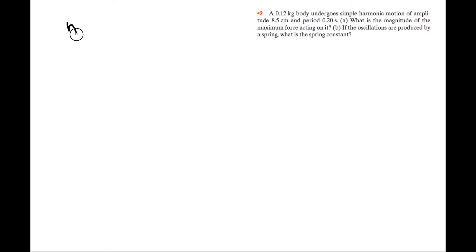I'm going to start by listing our variables. The mass is equal to 0.12 kilograms. Our period is equal to 0.20 seconds. And our amplitude is equal to 0.085 meters. Always remember to put it in standard units - meters, not centimeters.